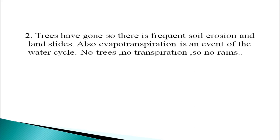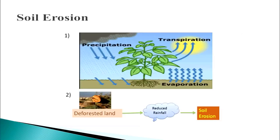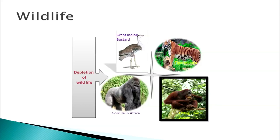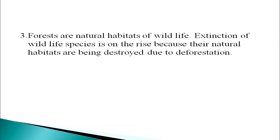Evapotranspiration is an important event of the water cycle. Without trees there is no transpiration and therefore no rains. Forests are natural habitats of wildlife. Extinction of wildlife species is on the rise because their natural habitats are being destroyed due to deforestation. Many wild animals live in forests; their homes are lost and many have become extinct or are on the verge of extinction. Details on this will be studied in our next program.